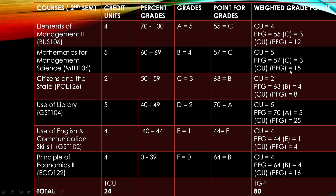Compared to getting a C in the same five-unit course, it is not as beneficial to focus effort on a two-unit credit course. If you have an A in a two-unit course, you only multiply 5 by 2, which is 10. But imagine having an A in a five-unit course — that is 5 multiplied by 5, which is 25. Please note this: always check your courses and know their credit units so you can know how to work strategically to boost your GPA. For GST 104 the CU is 5 and the PFG is 5, giving 25. Adding everything — 12, 15, 8, 25, 4, 16 — gives us 80. The total credit unit for this semester is 24.